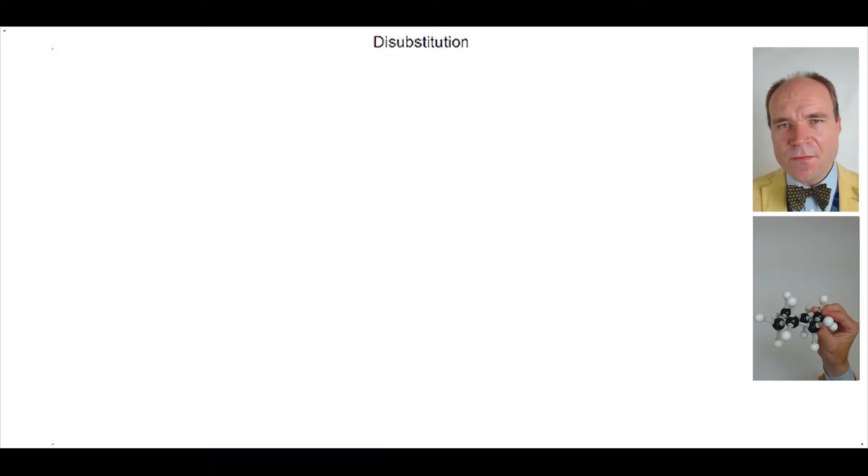Let's now see what happens if we replace two of the hydrogens in cyclohexane, both with a substituent. This is called di-substitution and for these observations all the substituents are going to be methyl groups. There are a variety of patterns that can arise.